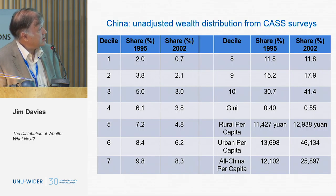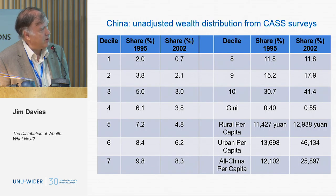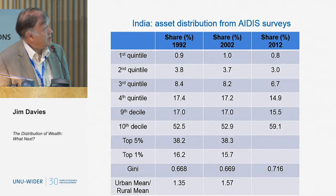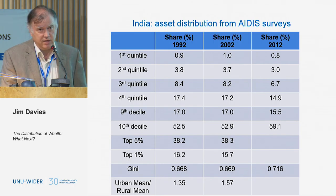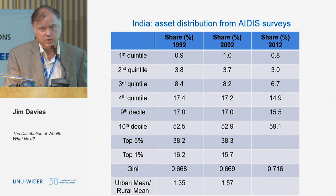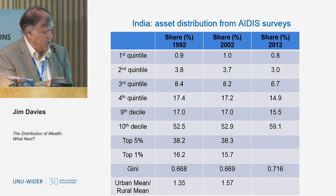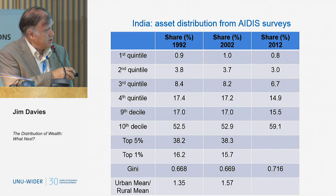For China, one of the big things that happened between 1995 and 2002 was that urban per capita wealth shot up while rural per capita wealth did not increase very much at all. India has had a wealth survey conducted every 10 years with a very large sample — about 130,000 households with a reported response rate of about 95%. The first two periods show relatively similar inequality, but the 2012 data, which is just out, shows the Gini coefficient leaping up to 0.716 — and this is without any adjustment for the upper tail.